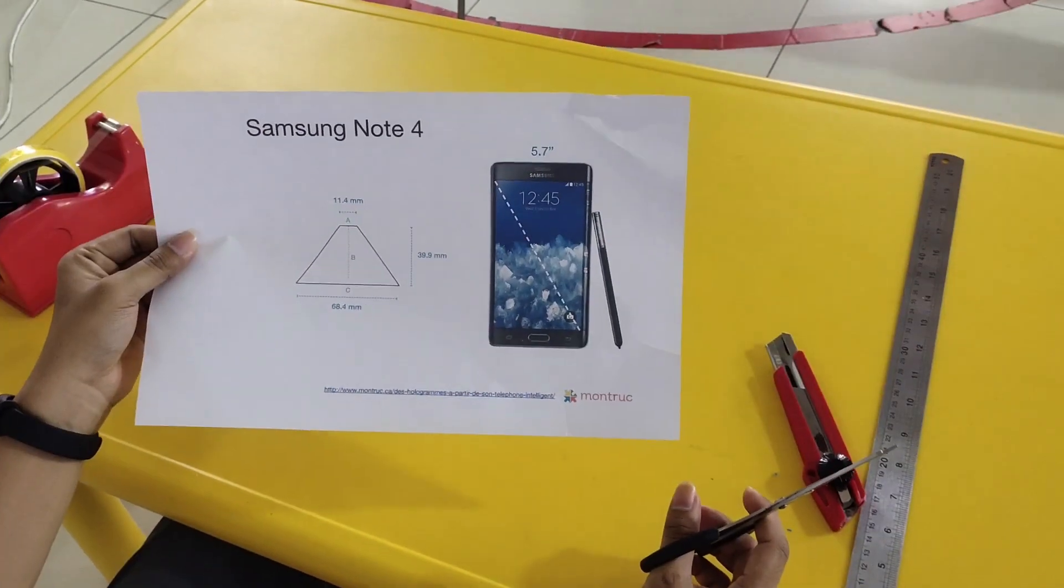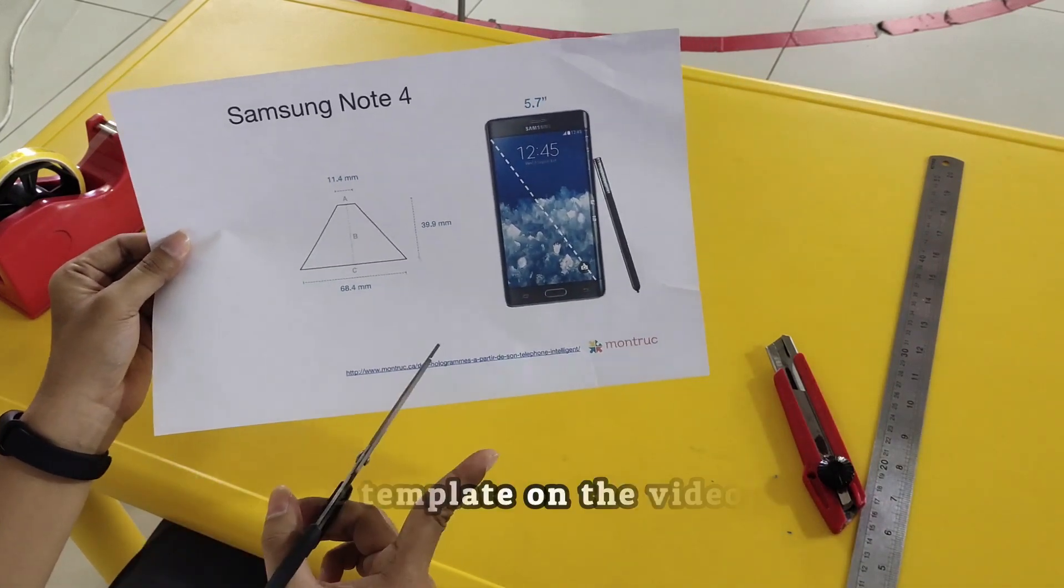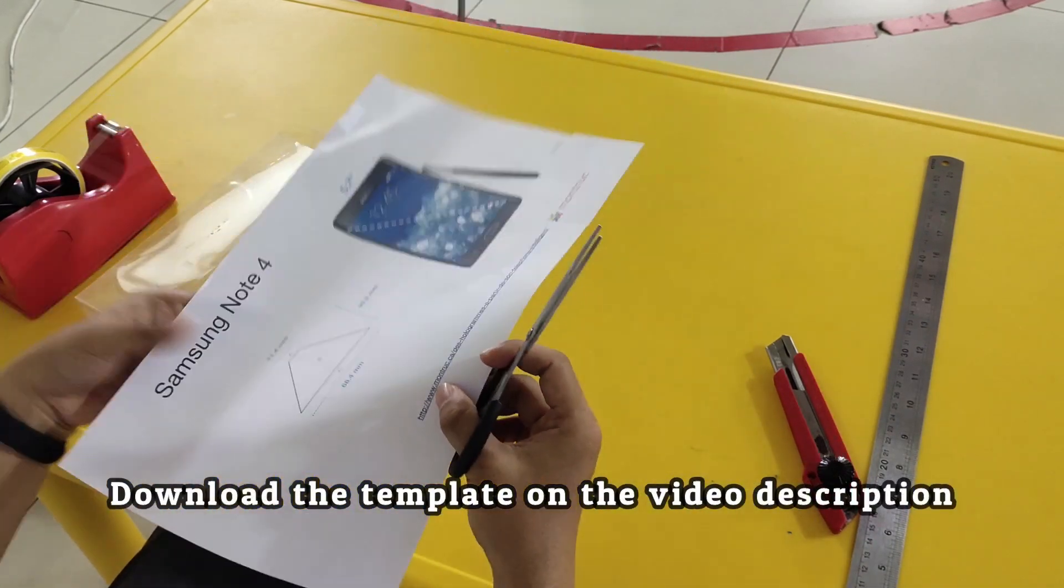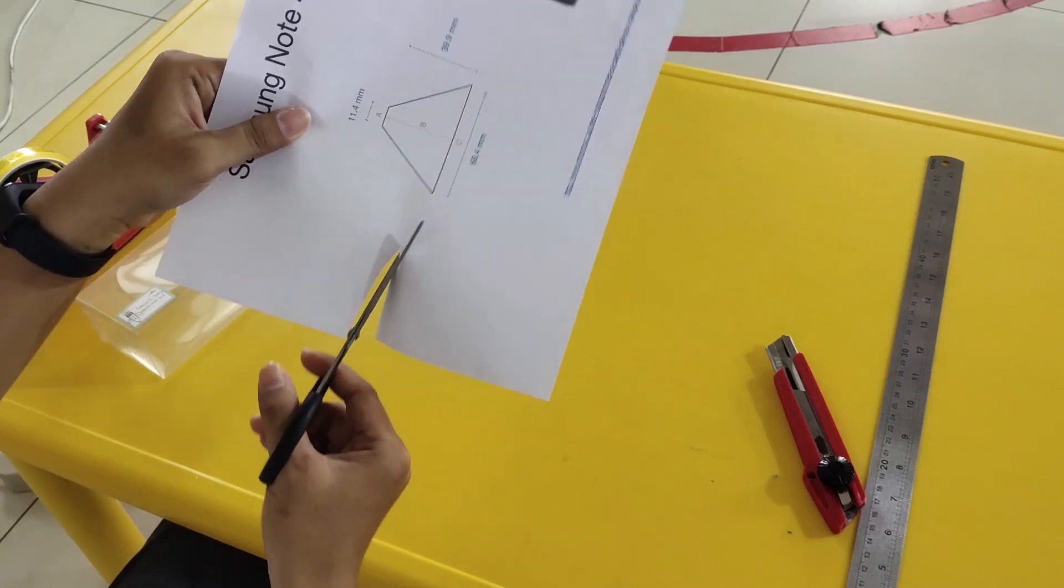Now, let's make the hologram. Yeah, the hologram that can be made by using this kind of materials. Let's do it. Okay, first step, we are going to cut the template that I have provided you in the link. Make sure to print it and then cut.